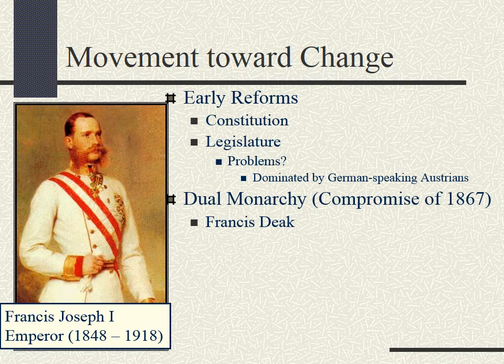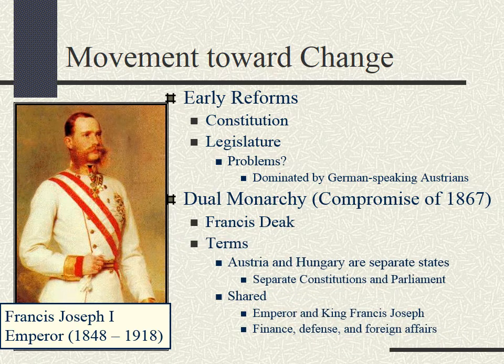He then appoints Francis Deák, who comes up with a great idea — the Compromise of 1867 — creating a dual monarchy. Francis Joseph becomes king of two countries: his empire is split into Austria and Hungary. He becomes the emperor of Austria and the king of Hungary. Think of it like the Articles of Confederation — they share the big things like finances, defense, and foreign affairs, but each has its own separate government and constitution. They do share Francis Joseph as their single leader, as a way of maintaining power and keeping control.